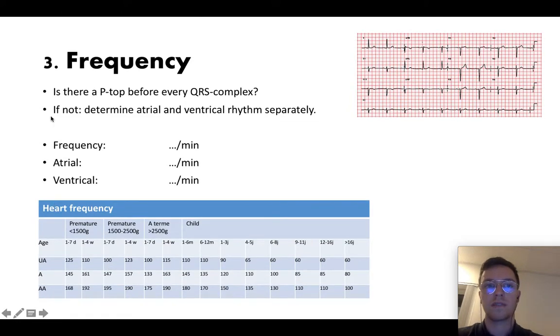Then you go to step three, you check the frequency. This can only be done easily if you have P-tops before every QRS complex, so when you have a sinus rhythm. If not, then you should determine the atrial and ventricle rhythm separately.